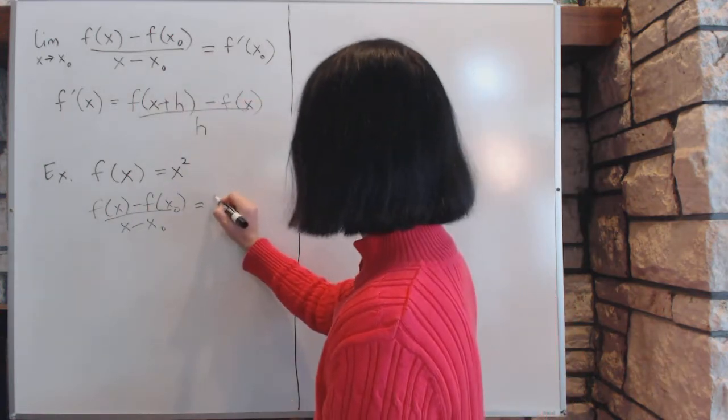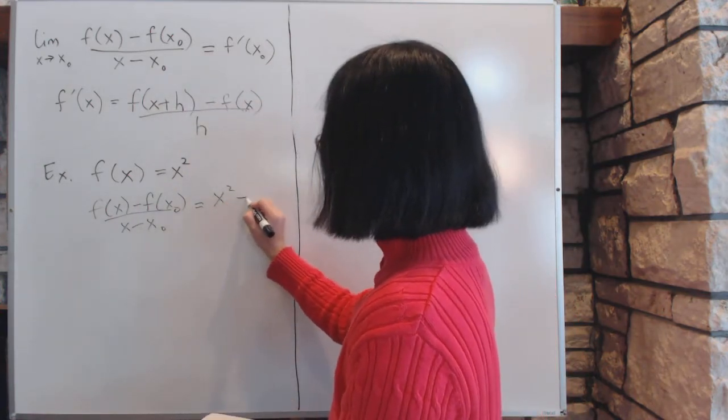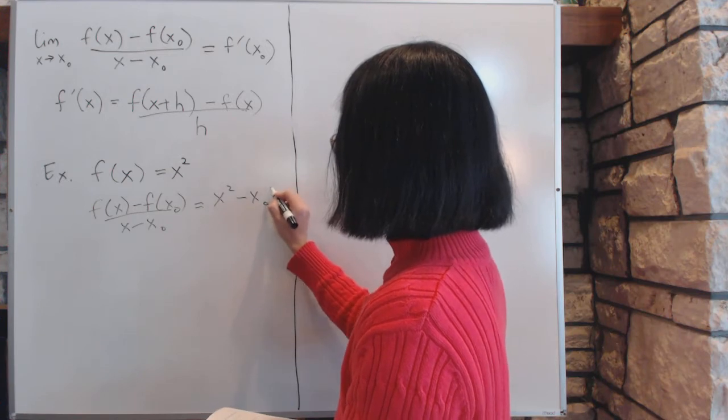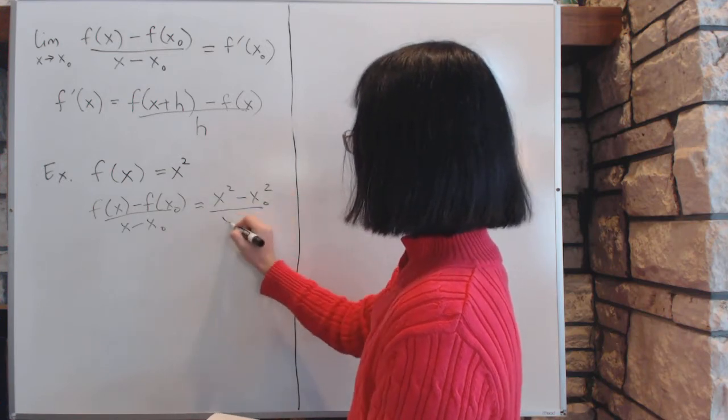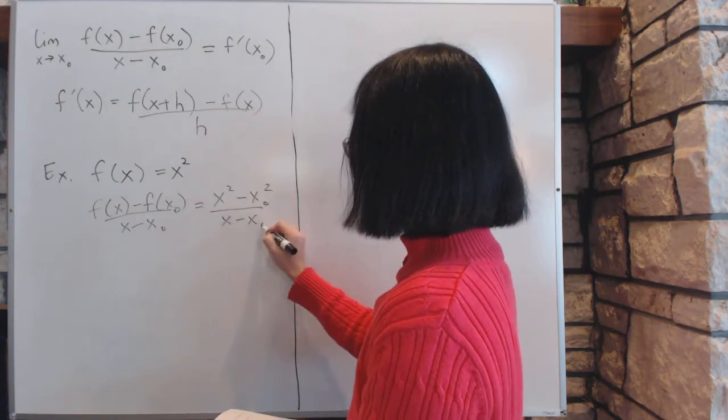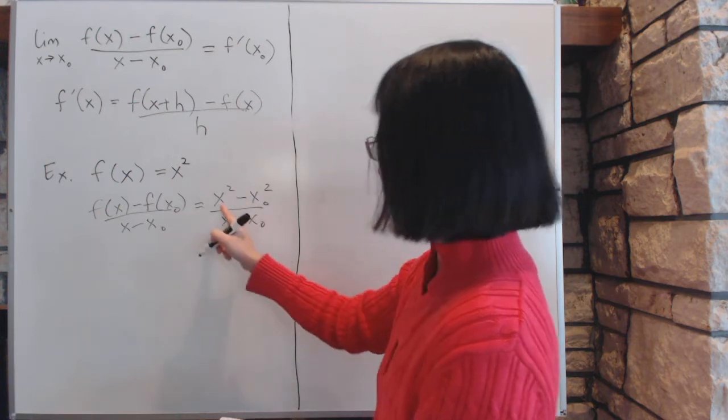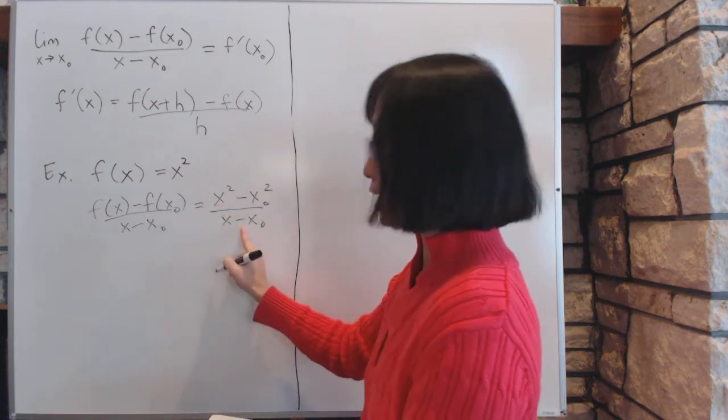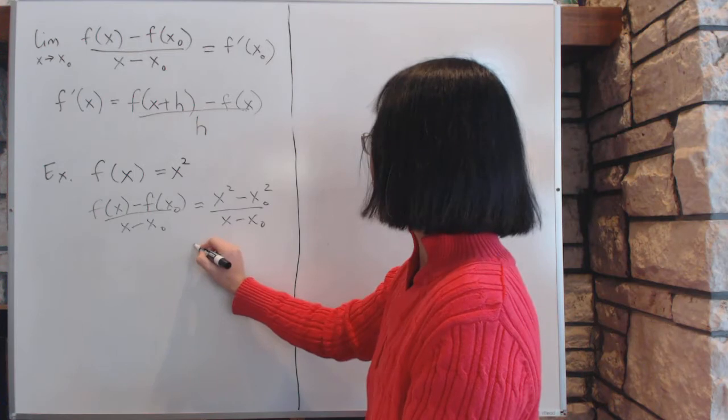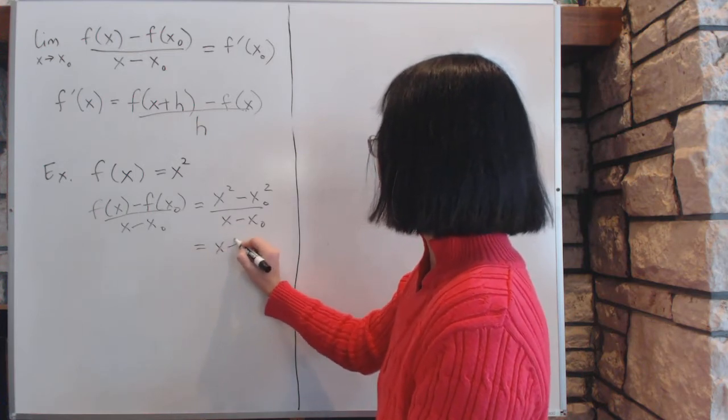Well, at least as an example, anyway. So then you copy this whole thing down, x squared minus x0 squared divided by x minus x0. And when you do the division, factor this out, and divide and cancel out the bottom, all you have left is x plus x0.